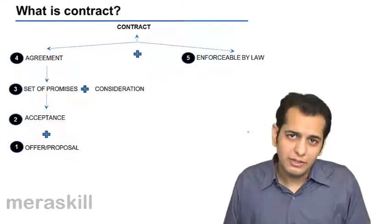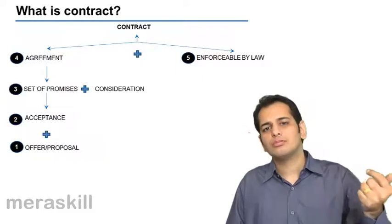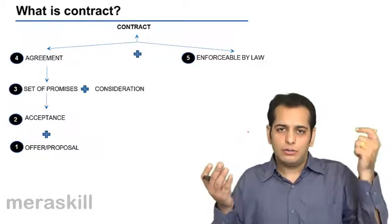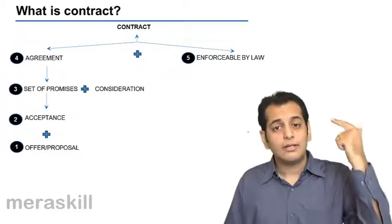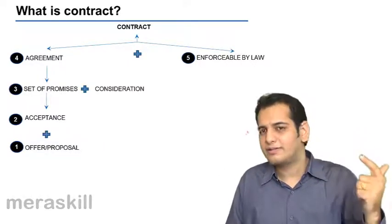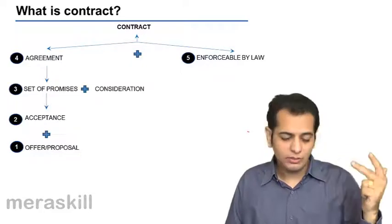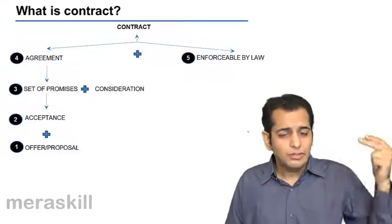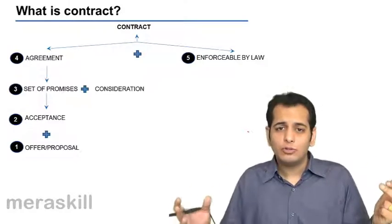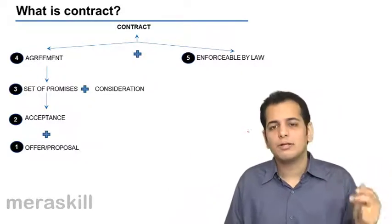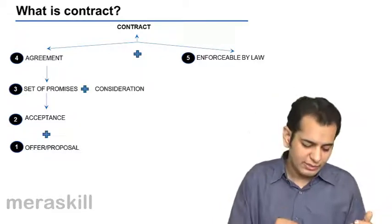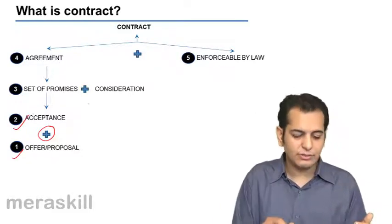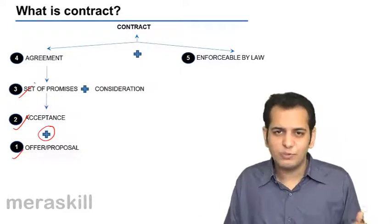A promise in turn leads to becoming an agreement. An agreement which is enforceable by law will become a contract. So you require an offer. That offer needs to be accepted, so you require acceptance. The third thing is promise. The offer and acceptance both together make a promise.